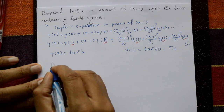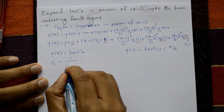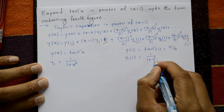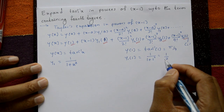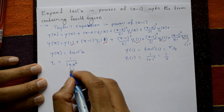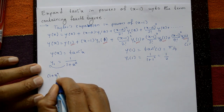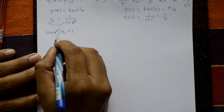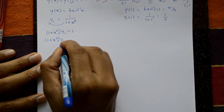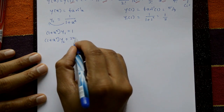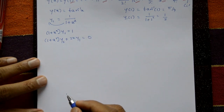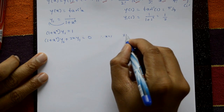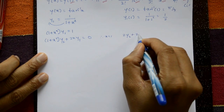Differentiate: y₁(x) = 1/(1+x²). Cross-multiply to get (1+x²)y₁ = 1, then differentiate: (1+x²)y₂ + 2x·y₁ = 0. Put x = 1: 2y₂ + 2y₁ = 0.